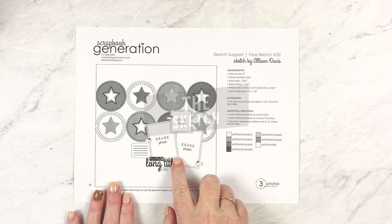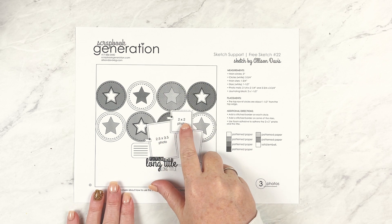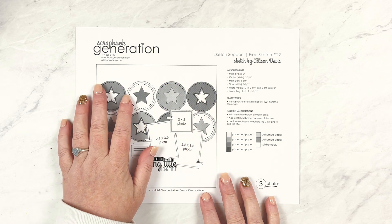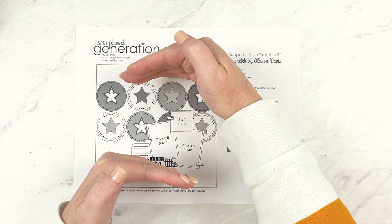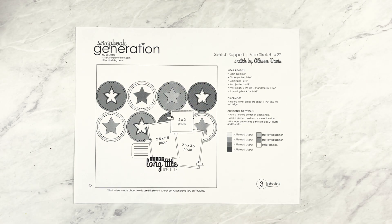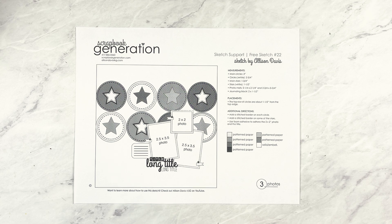This sketch has three photos — two wallet size and one two-by-two inch photo — and then a background made up of two rows of three-inch circles covering a twelve-by-six inch space. When I created this sketch I envisioned those circles being slightly different, whether it's different colors, patterns, or textures. I thought it would be a fun background design to play around with. There's really so much you can do with them, from changing the size and amount to using completely different shapes in place of those circles.